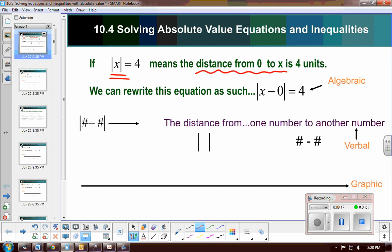So since there is not a second number written there, or a second term written, we can rewrite this as the absolute value of x minus 0 equals 4. And that would mean the distance from 0 to x is 4 units.